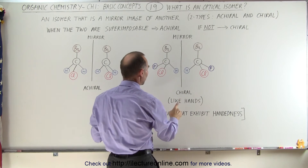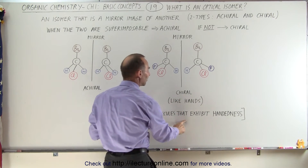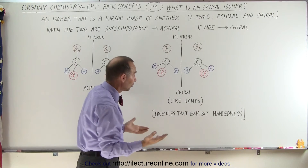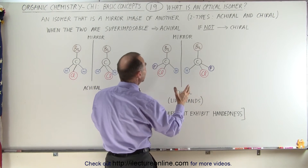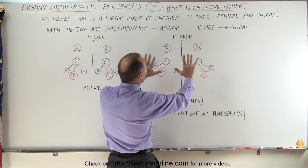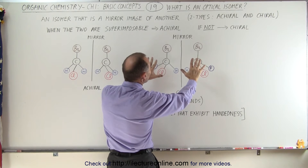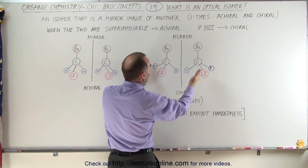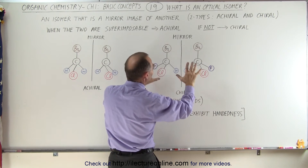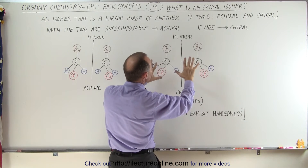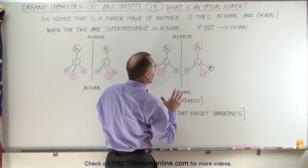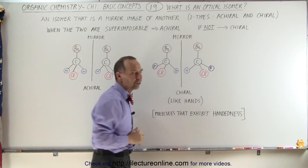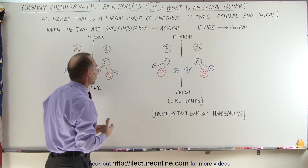So they say that molecules that exhibit handedness — that's the term they use — are chiral, meaning they're optical isomers, but they are mirror images of each other, except they're not the same molecule. They have a different structure, and there's no way you can superimpose one over the other and make them look the same.